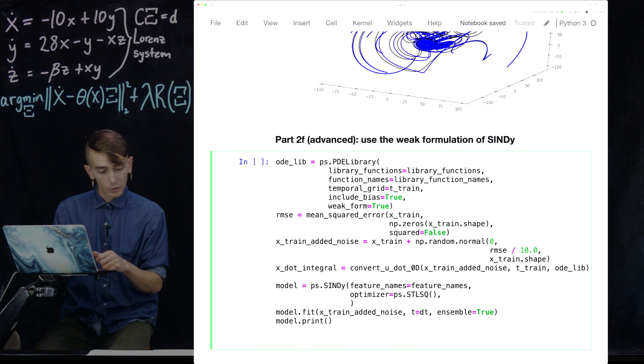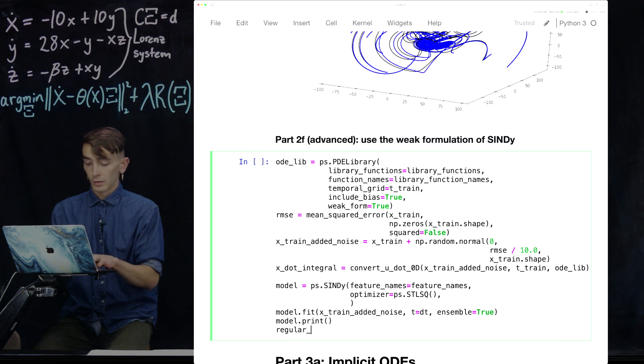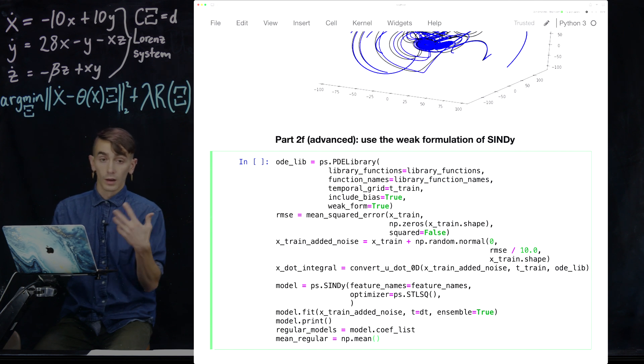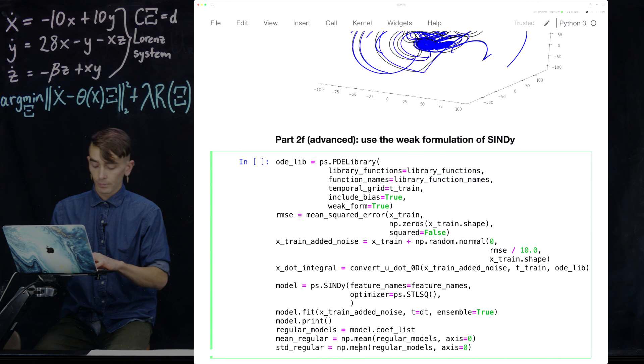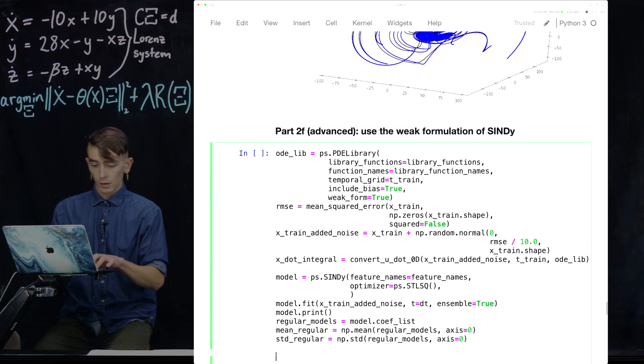And then, we're going to save those models that we generated with the ensembling. And then, take the average and the standard deviation of those once again, as we did in the ensembling video. So let's copy this. Good. Good.